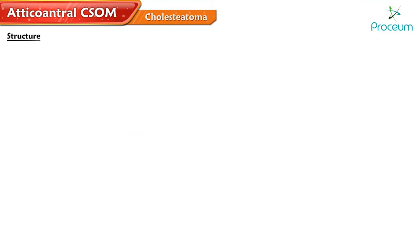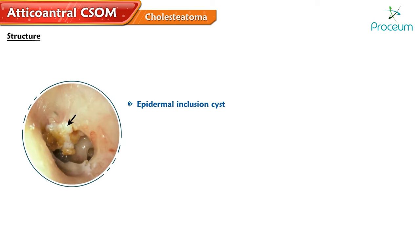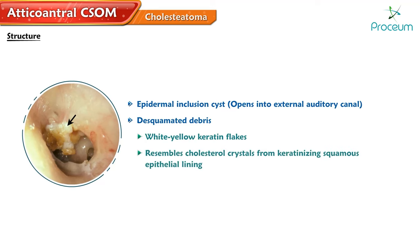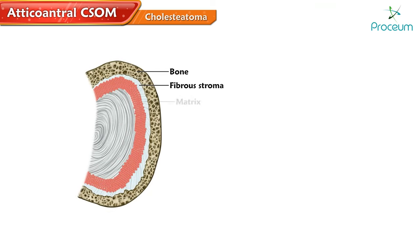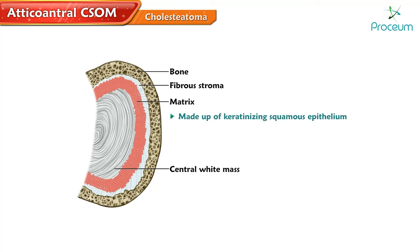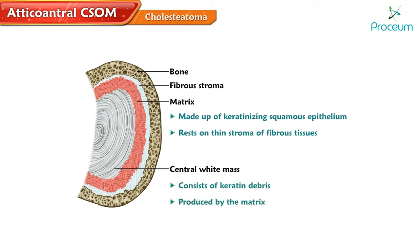Structure. Cholesteatoma is an epidermal inclusion cyst that opens into the external auditory canal. It contains desquamated debris, which is mainly white-yellow keratin flakes resembling cholesterol crystals, from its keratinizing squamous epithelial lining. Cholesteatoma has two parts: the matrix, made up of keratinizing squamous epithelium resting on a thin stroma of fibrous tissue, and the central white mass, which consists of keratin debris produced by the matrix.